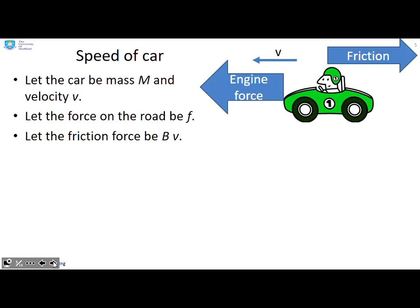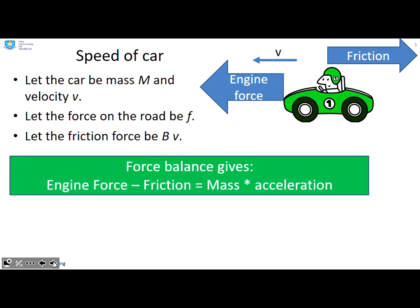Example one, speed of a car. Let the car be mass m and have velocity v. Let the force on the road be f and let the friction force be bv. So if we were to do a force balance, what we would get is the force produced by the engine minus any friction forces is going to give you mass times acceleration.